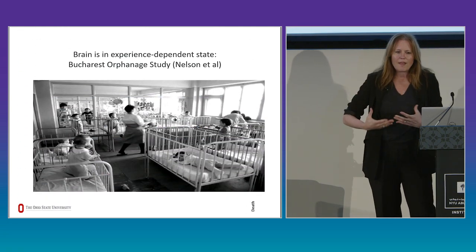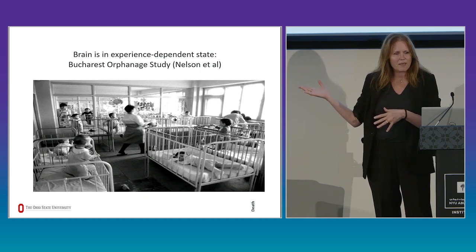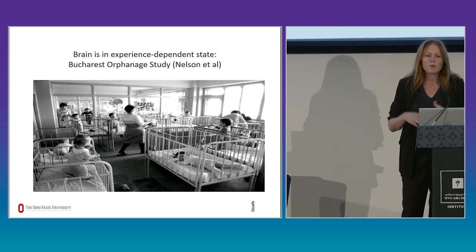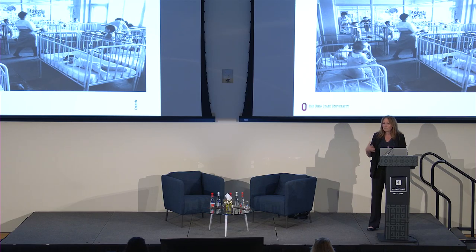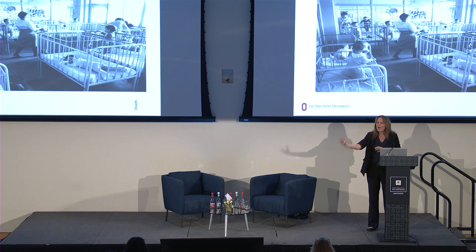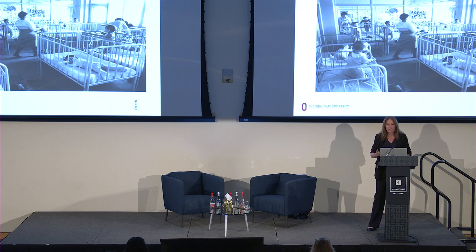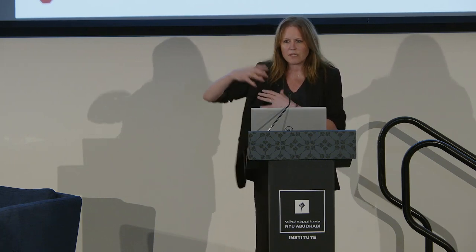We know these preschool years are so important based on certain experiments. I'm alluding to the Bucharest orphanage study done about two decades ago in Romania. A team led by Charles Nelson at Harvard did a randomized control trial where children were taken out of orphanages and placed in higher-quality caregiving settings — basically foster homes. They showed a significant boost in cognition and language that lasted through follow-ups into the twenties. We have not only correlational but also experimental evidence that early experiences are critical.